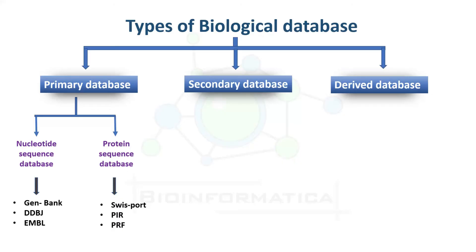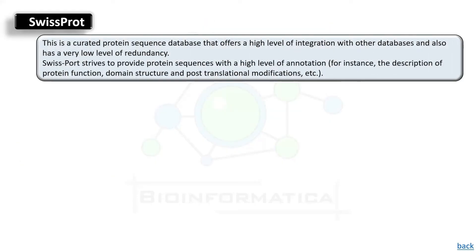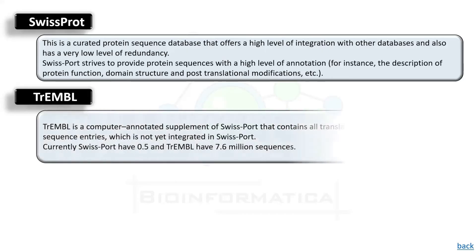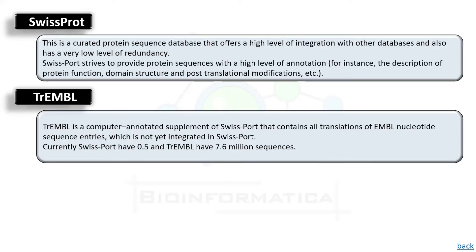Moving to protein sequence databases, we will go through three: SwissProt, PIR, and PRF. SwissProt is a curated protein sequence database that offers a high level of integration with other databases and a very low level of redundancy. SwissProt strives to provide protein sequences with a high level of annotation — for instance, the description of protein function, domain structure, and post-translational modifications. Next is TrEMBL, a computer-annotated supplement of SwissProt that contains all translations of EMBL nucleotide sequence entries not yet integrated into SwissProt.